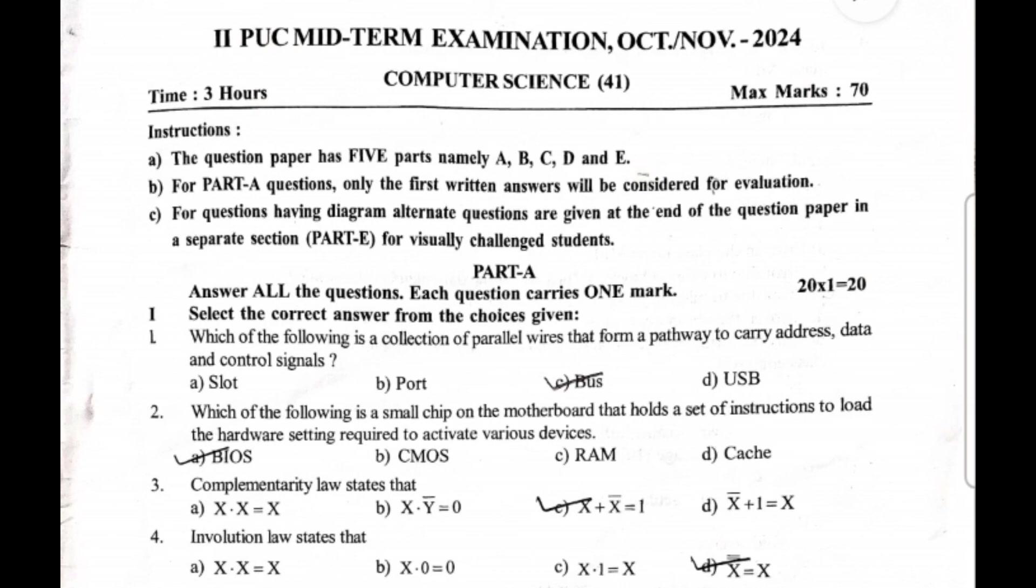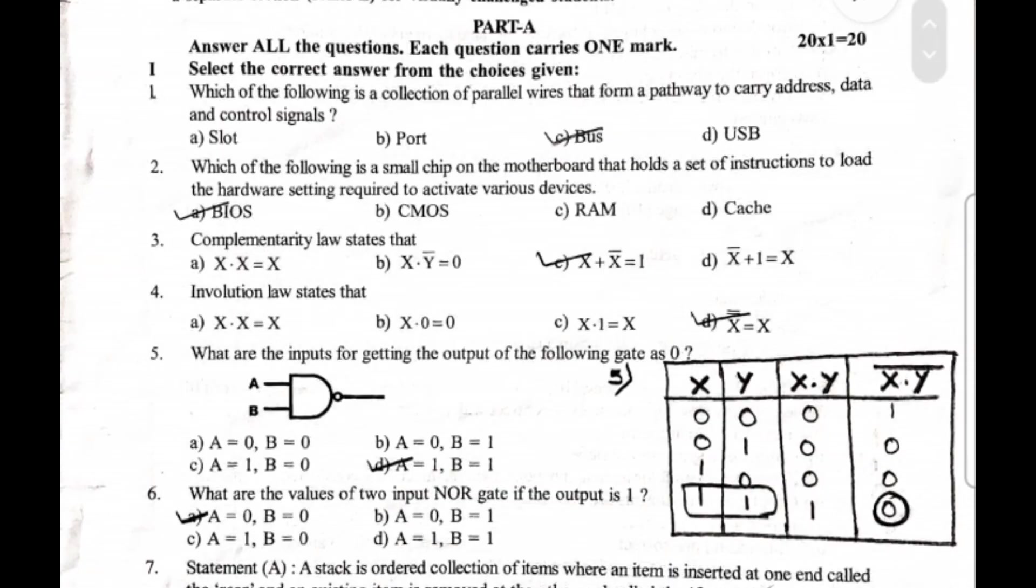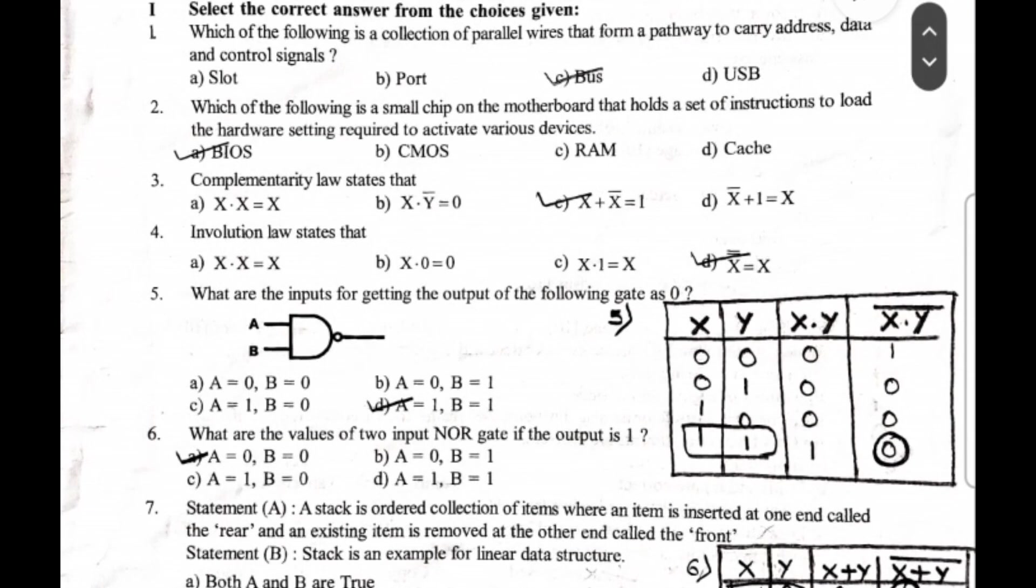First question: which of the following is a collection of parallel wires that form a pathway to carry address, data, and control signals? The correct answer is option C, bus. Second question: which of the following is a small chip on the motherboard that holds a set of instructions to load the hardware setting required to activate various devices? The correct option is option A, BIOS. Third question: complementary law states that - the correct option is option D.